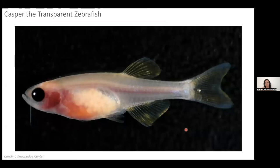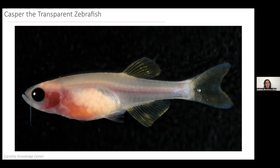In zebrafish — and I recently heard that also in killifish they developed this model — there is a mutant called Casper, where they have completely removed the pigments even in adult fish. You can see this fish is adult and you can see the eggs inside the belly of the female. The advantage of this model is that you can take advantage of the fish's transparency for longer time periods, not just during development. This model was originally used for cancer biology and cancer research, to see how cells were invading the body. But nowadays Casper is widely used in different areas of zebrafish research.